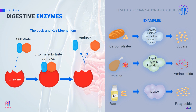Enzymes are proteins that act as biological catalysts and speed up chemical reactions in the body without being used up. Each enzyme has a specific region called an active site, in which a molecule called a substrate binds, forming an enzyme-substrate complex. Enzymes are very specific, meaning that only one specific substrate can bind to a specific active site — this is called the lock and key model.